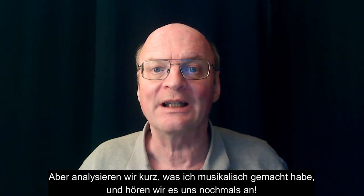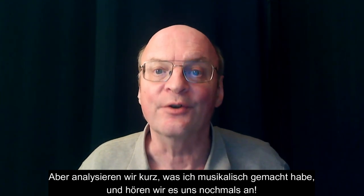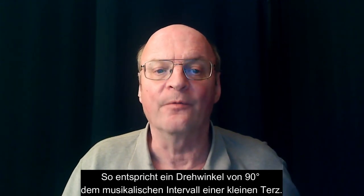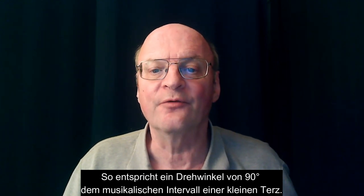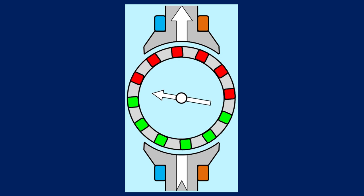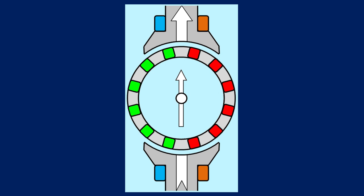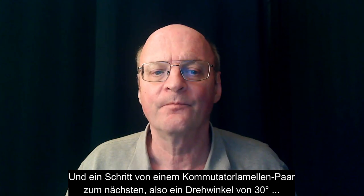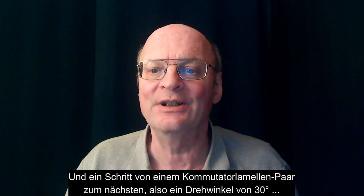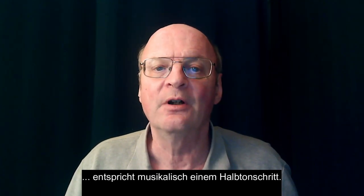But let's shortly analyze what I have done musically and listen to it once more. I just assigned the direction of the magnetic fields to the musical notes within one octave. Thus, an angle of 90 degrees corresponds to an interval of a minor third. And a step from one pair of commutator bars to the next, meaning an angle of 30 degrees, corresponds to an interval of a semitone.